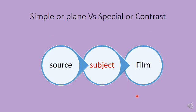Coming to simple or plain x-rays versus special or contrast x-rays. The subject is the key factor deciding which type it will be. If a person or part of the body is placed between source and film and x-rays are taken as is, that becomes a plain x-ray. In plain x-rays, bones, dense parts of the body, or calcified cartilages are usually visualized. However, to make some hollow viscera visible in x-rays requires a different approach.